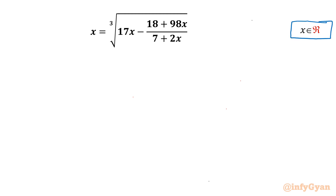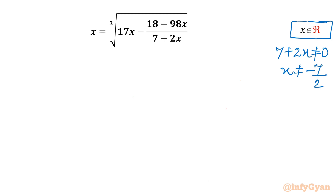Let's get started by writing the domain of the equation first. The denominator cannot be 0, so 7 plus 2x cannot be equal to 0. From here we have x cannot be equal to negative 7 over 2.